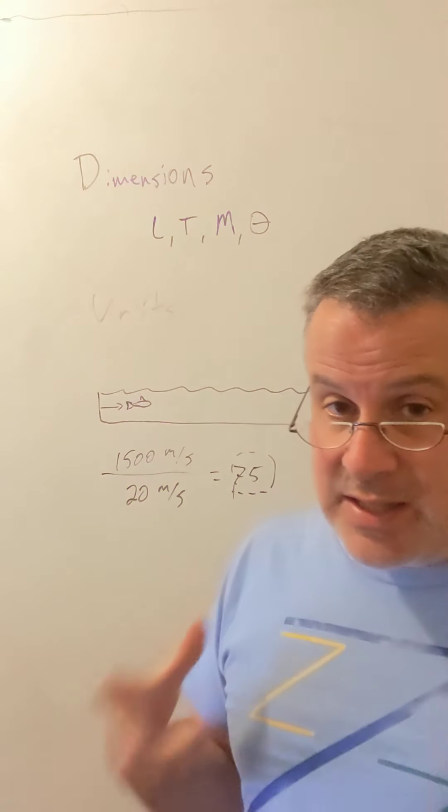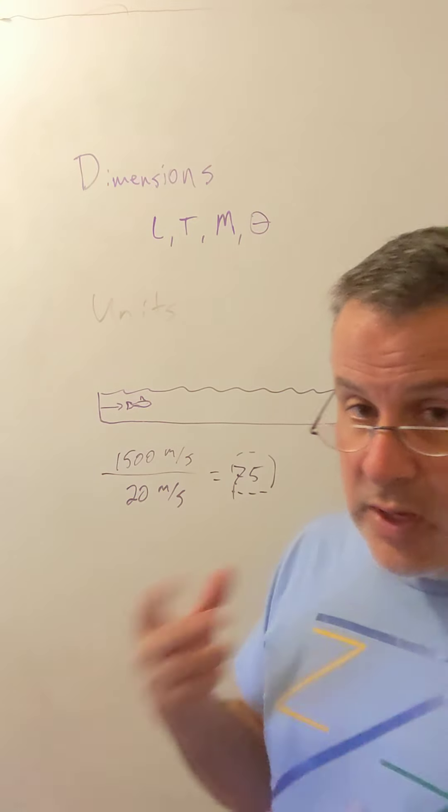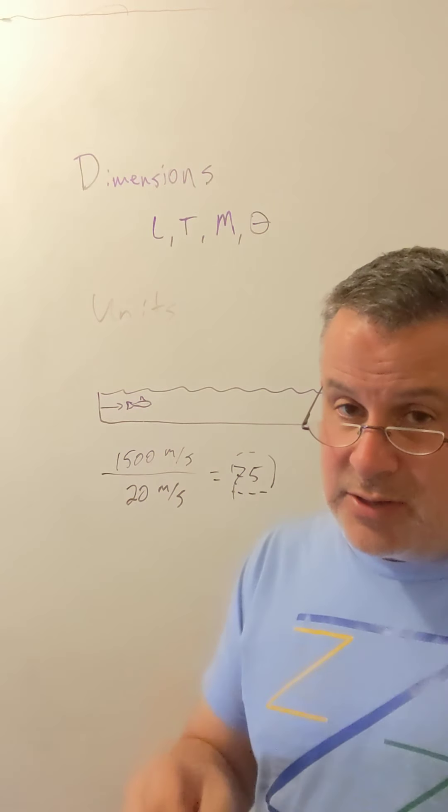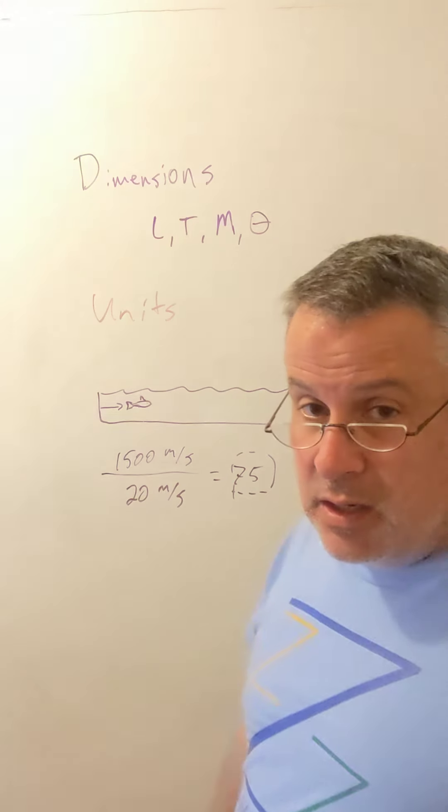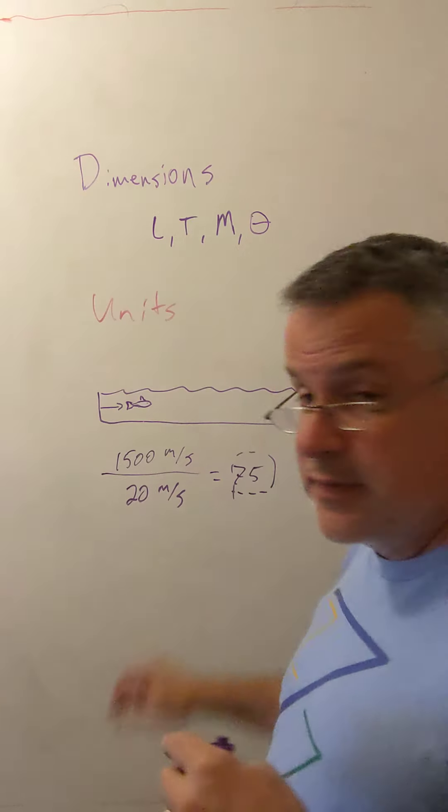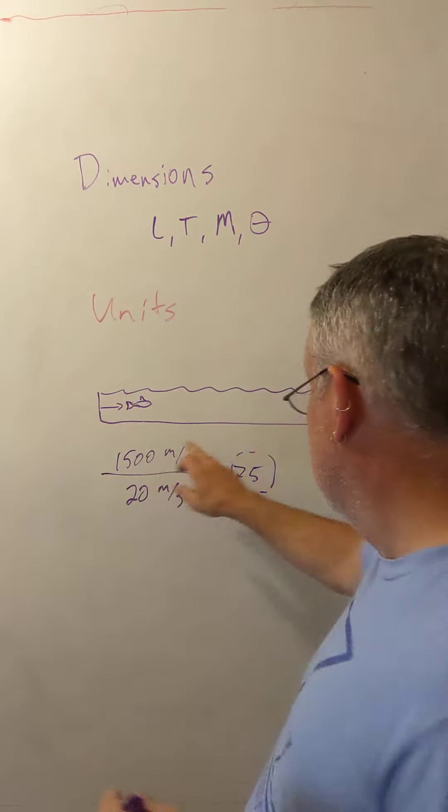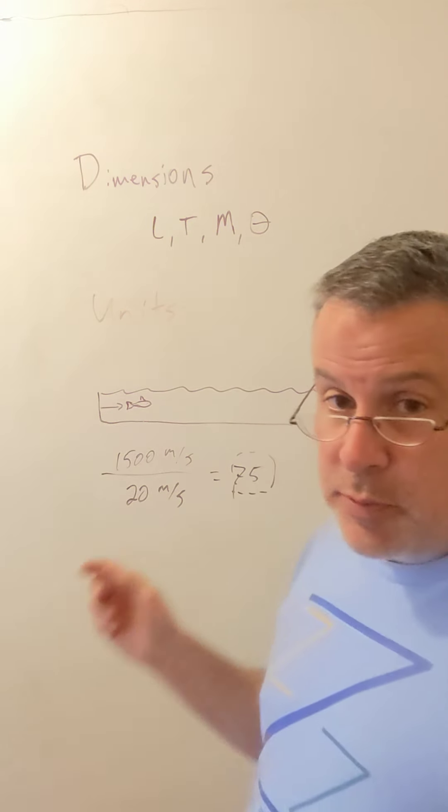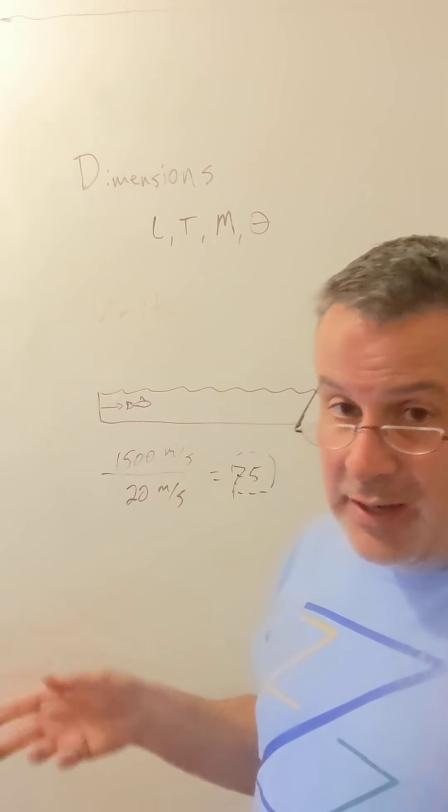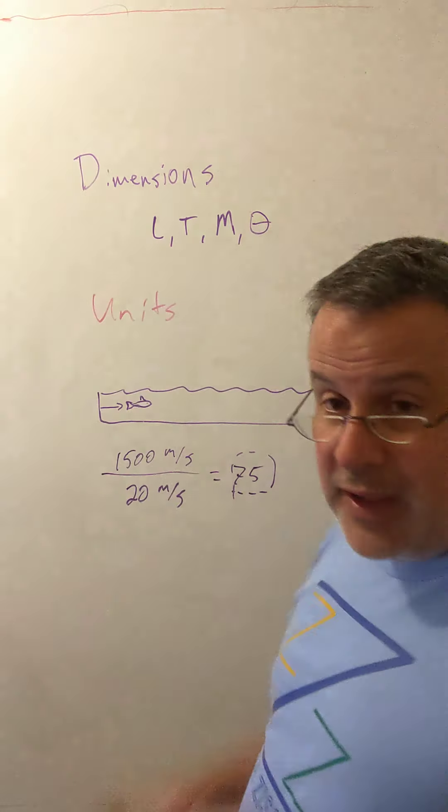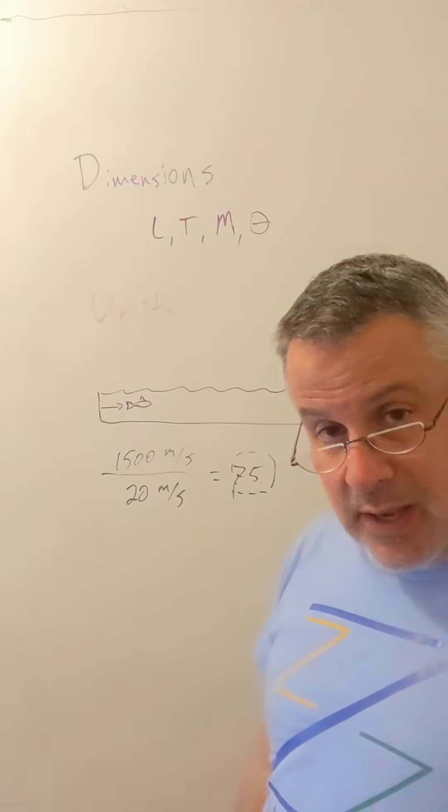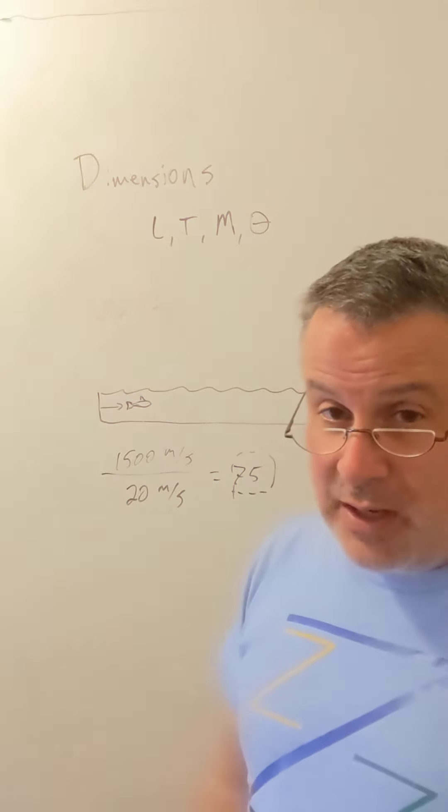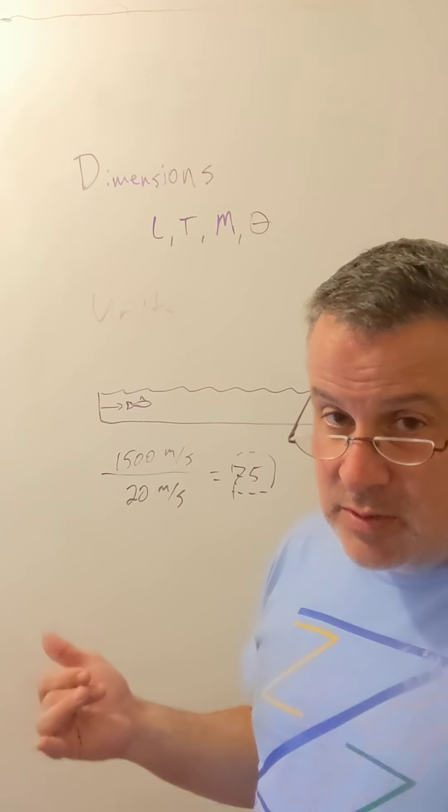So dimensionless things are something that we can build theories out of because it doesn't matter what units you measure them in. If I had measured these in feet per second, I would have gotten exactly the same ratio of 75. If I had measured these in swimming pool lengths of 100 meters per second or 100 meters per fortnight or anything like that, I still would have kept those units cancel out and the dimensions cancel out to get a dimensionless ratio of 75 being the ratio of one speed to another speed.